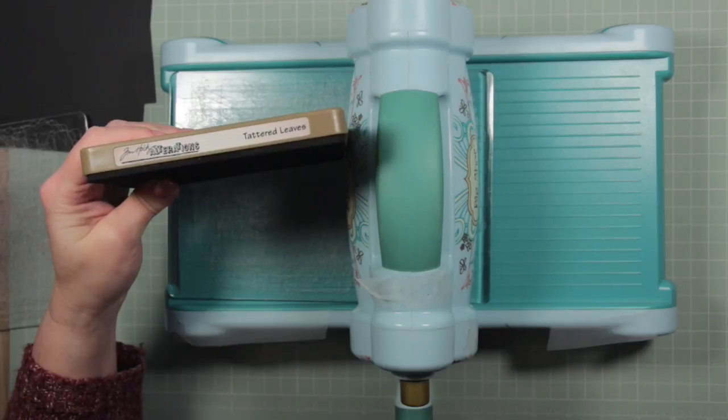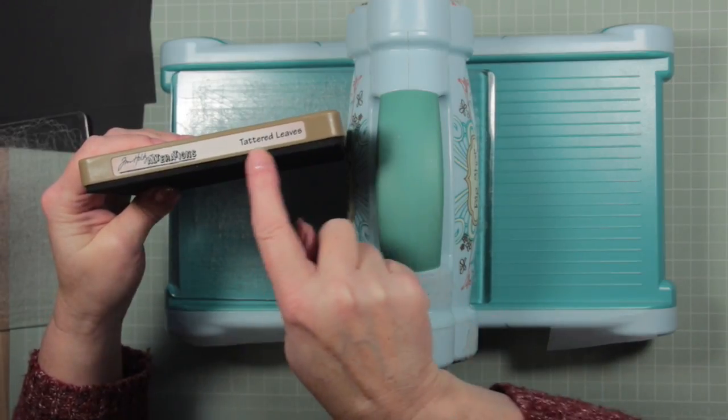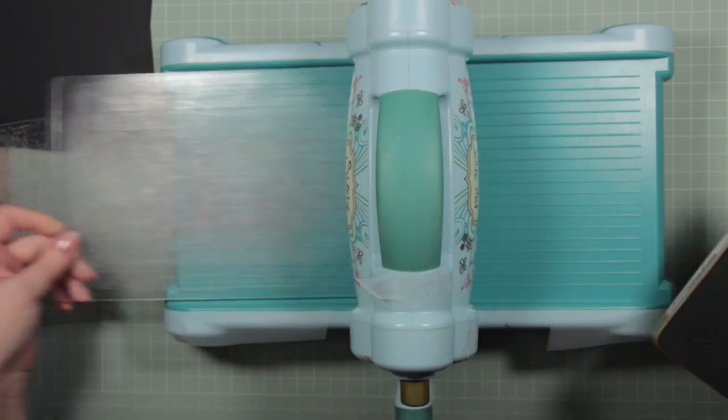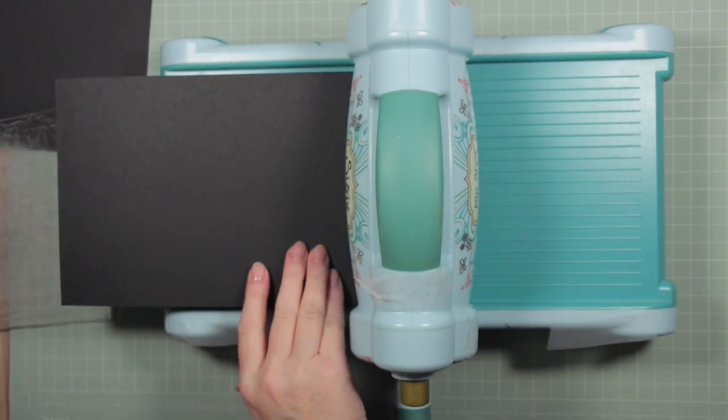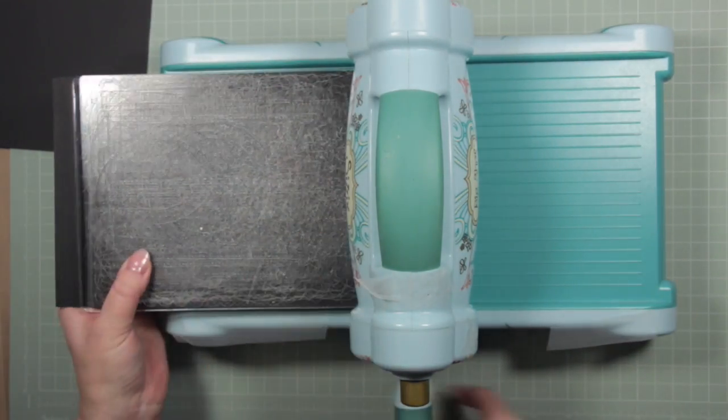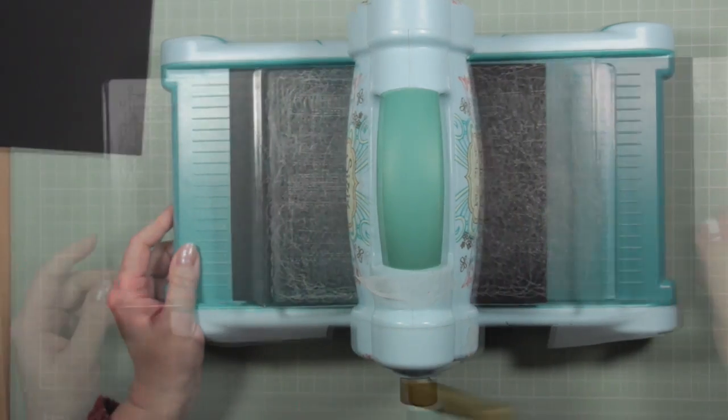For this card I'm going to show you a couple of different techniques and we're going to start with quite an old die. This is to cut out some leaves. It's a Sizzix tattered leaves die. I will provide links to all of the items that I used to make this card in the video below.